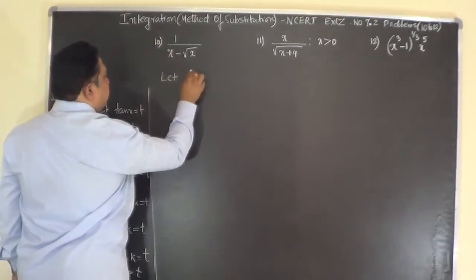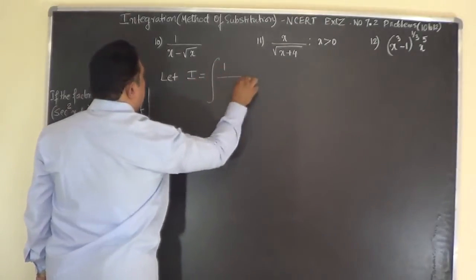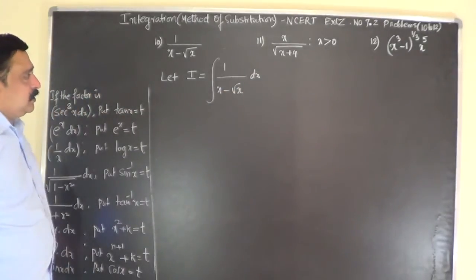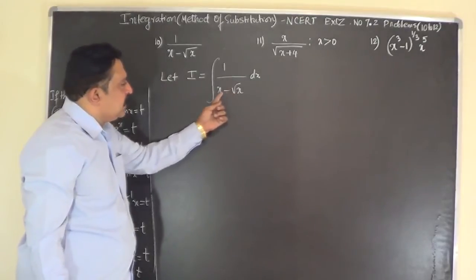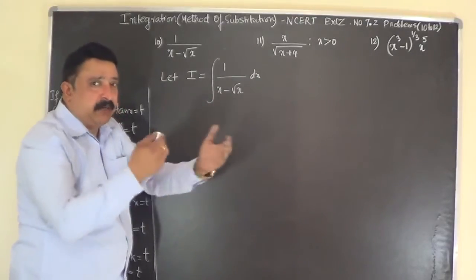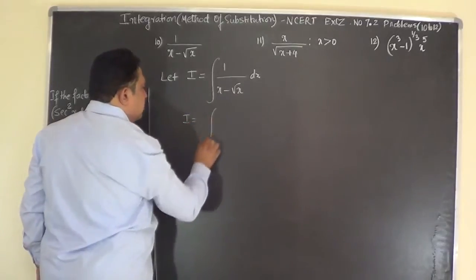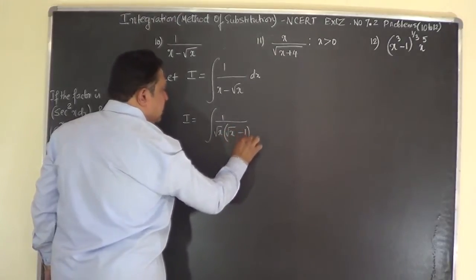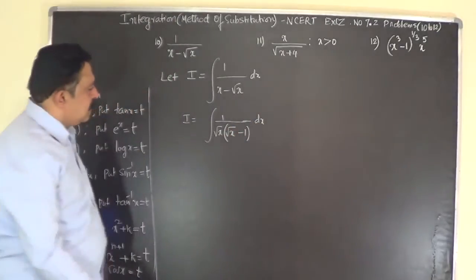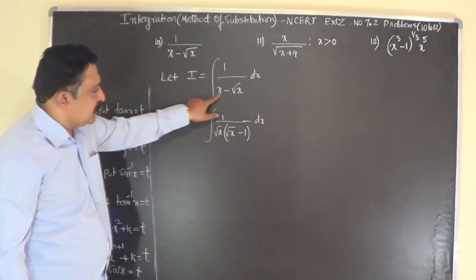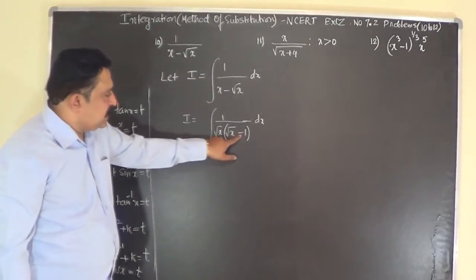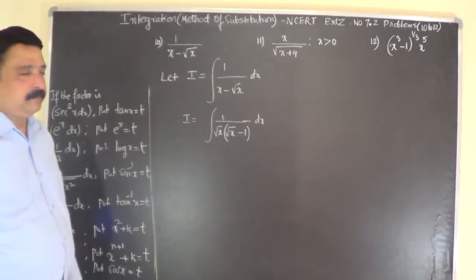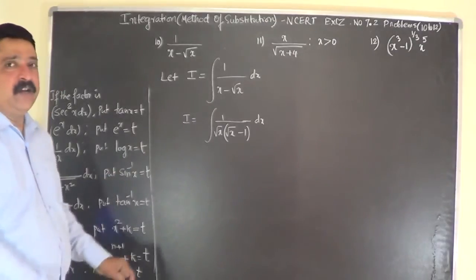Problem number 10: let I equal the integral of 1 over (x minus √x) dx. If you observe the problem, in the denominator you can easily make out that √x can be taken as a common factor. So we get 1 over √x times (√x minus 1) dx, because √x times √x is x, and √x times 1 is √x.